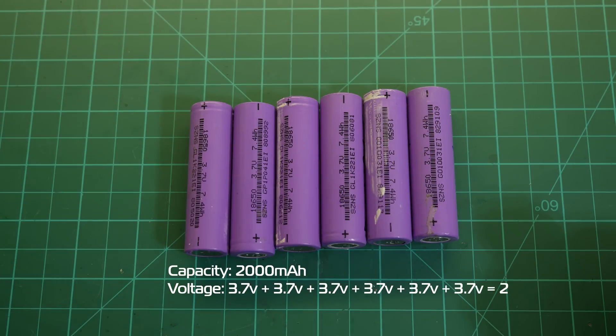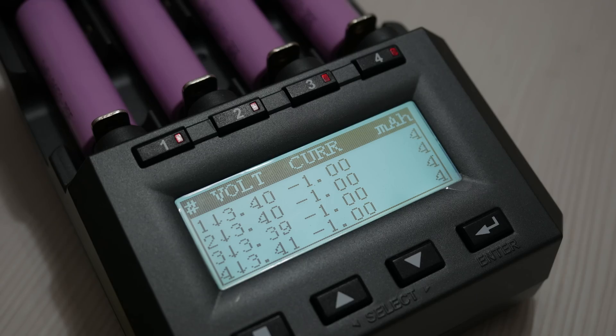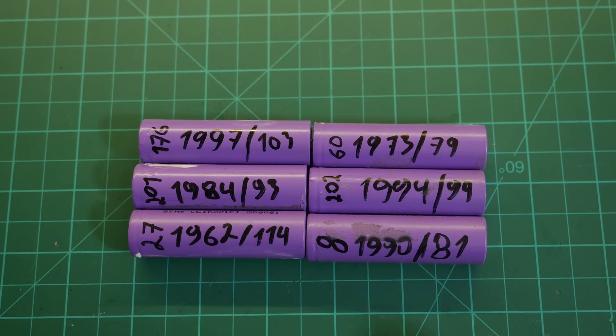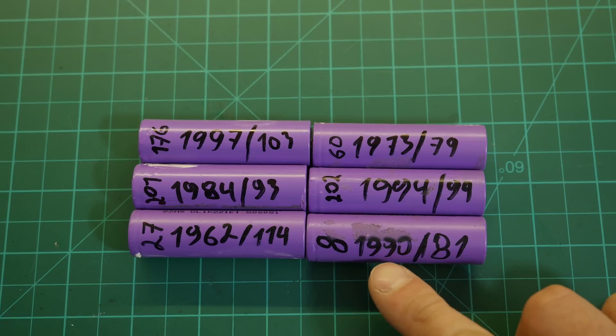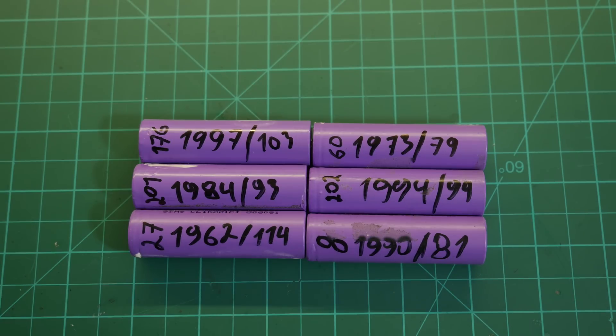One thing I like to do before actually putting the cells in a pack is to cycle them on my MC3000 charger or similar so I can determine internal resistance and real capacity which helps with sorting and matching them better.